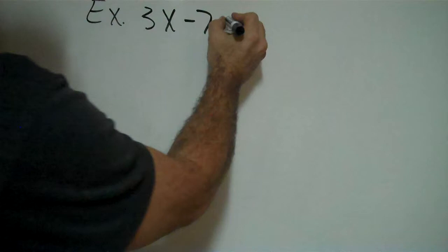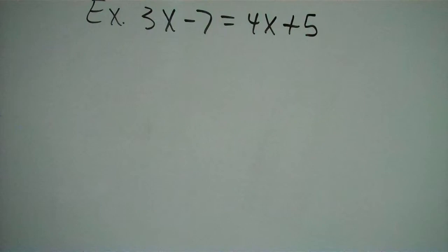Alright, in these examples I'll be solving equations as in module 8.2. So for my first example I'm going to put 3x minus 7 equals 4x plus 5.